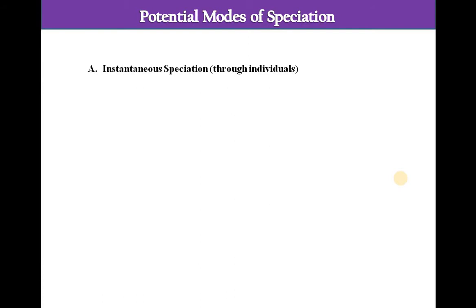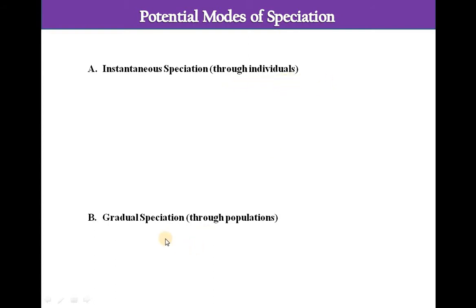What are the potential modes of speciation? There are two modes: instantaneous speciation, which occurs at a fast rate, and gradual speciation, which occurs at a comparatively slow rate. Instantaneous speciation occurs through individuals, while gradual speciation occurs through populations.